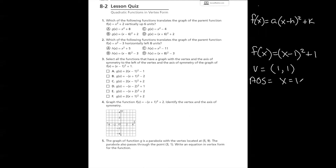Letter A has a vertex of (1, negative 1) and axis of symmetry x equals 1 — exactly the same x-value as our original, so it is not to the left. Letter A does not work. Letter B gives a vertex of (negative 1, negative 2) and axis of symmetry x equals negative 1. Graphed, this is to the left of our original vertex (1, 1) and axis of symmetry x equals 1. So letter B is correct.